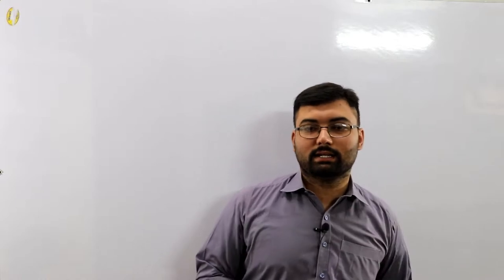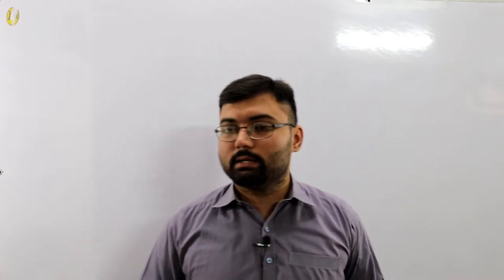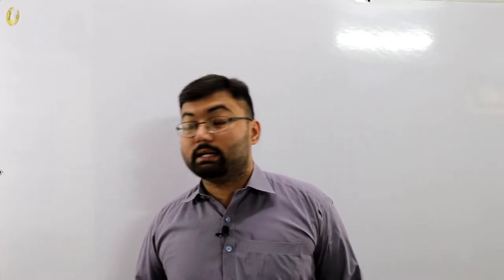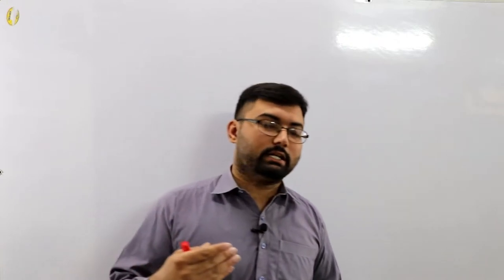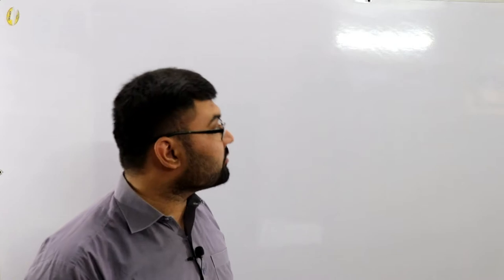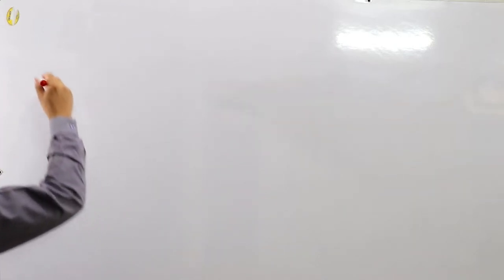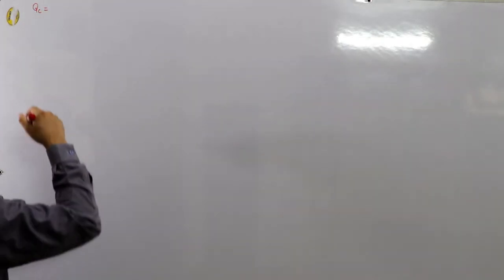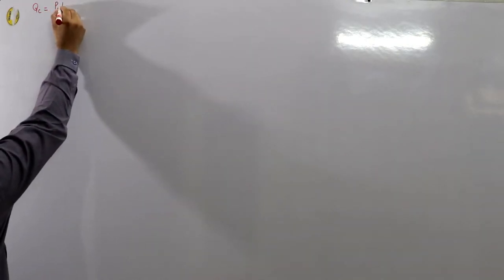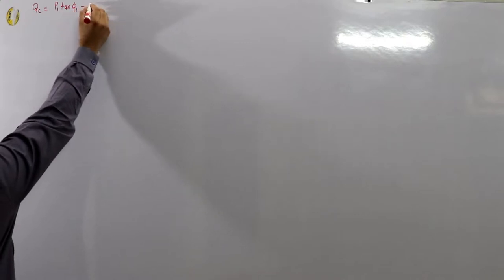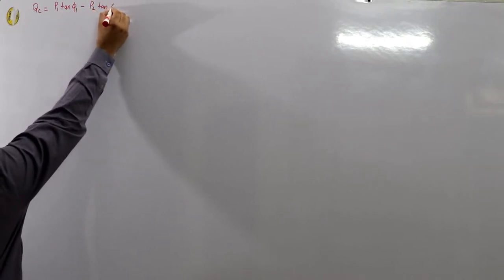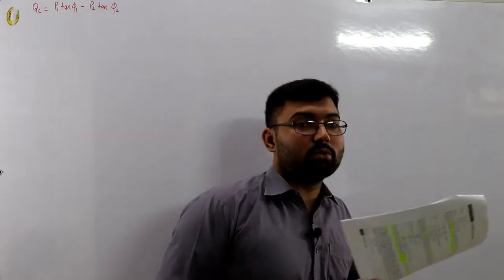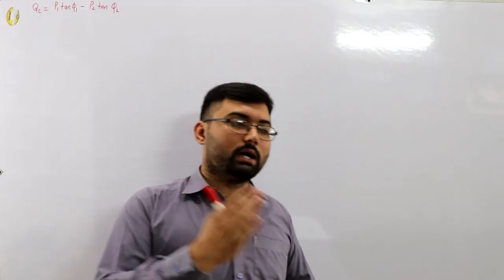Hello everyone, welcome back to the channel. We've been discussing power factor improvement from the previous videos. Today we have a number of examples relating to power factor correction equipment ratings. The formula developed in the previous video was: QC, the capacitor leading kVARs injected by the capacitors, equals P times (tan φ1 minus tan φ2), where φ1 and φ2 are the power factor angles before and after correction.